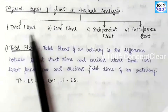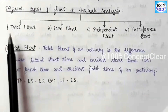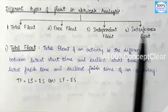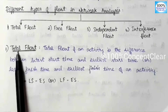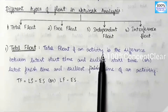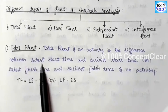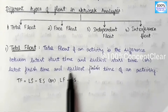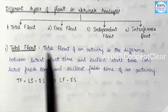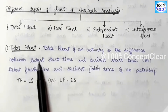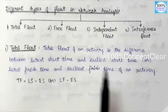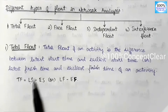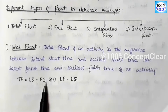Next, in Network Analysis, there are four types of floats. The first is Total Float, the second is Free Float, the third is Independent Float, and the fourth is Interference Float. Total Float of an activity is the difference between Latest Start Time and Earliest Start Time, or Latest Finish Time and Earliest Finish Time. The formula for Total Float is: Late Start minus Early Finish.